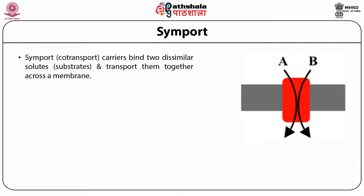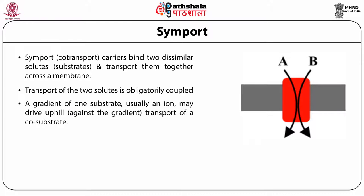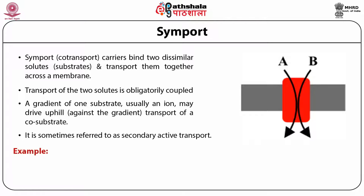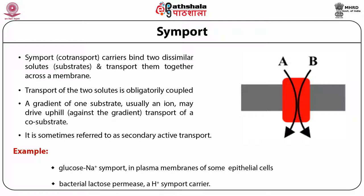Symport carriers co-transport two dissimilar solutes or substrates together across a membrane. Transport of these two solutes is obligatorily coupled, and a gradient of one substrate — usually an ion — may drive the uphill transport of the co-substrate. This is sometimes called secondary active transport. Examples include the glucose-sodium symport in the plasma membrane of some epithelial cells, and the bacterial lactose permease which is a proton symport carrier.